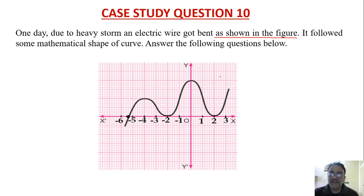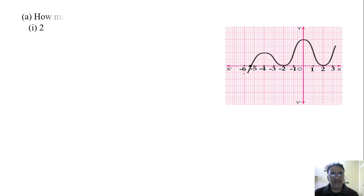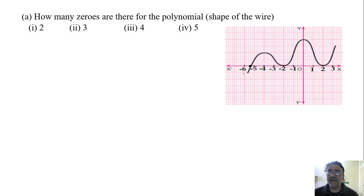We have to see this graph and answer the following questions. The first question: how many zeros are there for the polynomial? We have to see how many times it intersects the x-axis - three times. So the correct option is the second one.